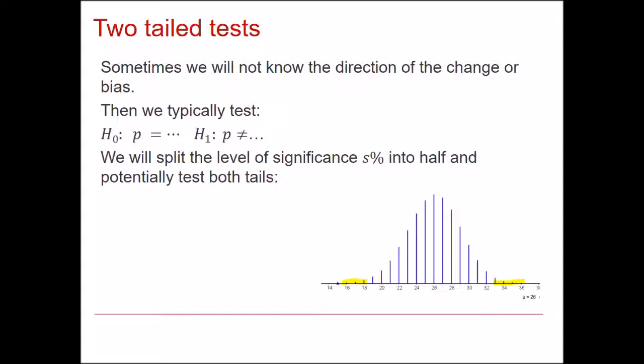There are also two tailed tests because where we don't know whether the coin is biased towards heads or tails. So we typically test both sides of the probability distribution. And you'd split the level of significance into half. There are going to be examples of two tailed tests in the Poisson distribution in other videos.